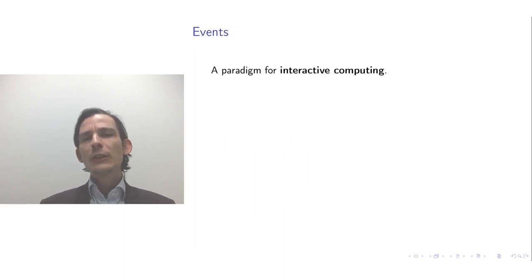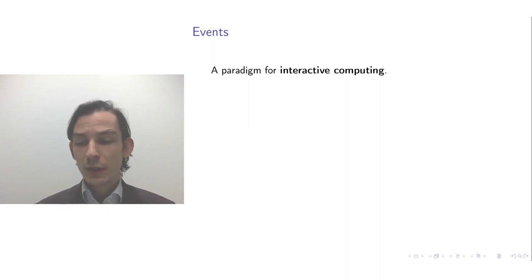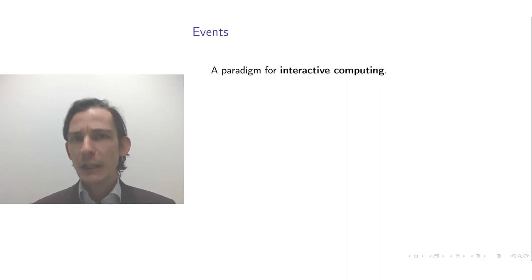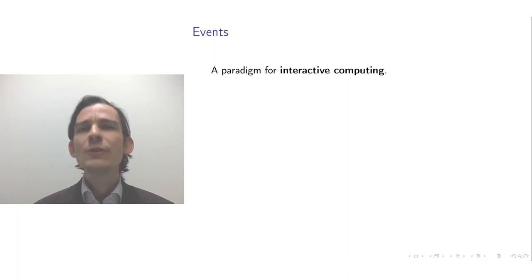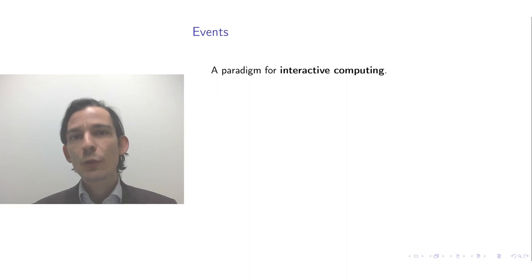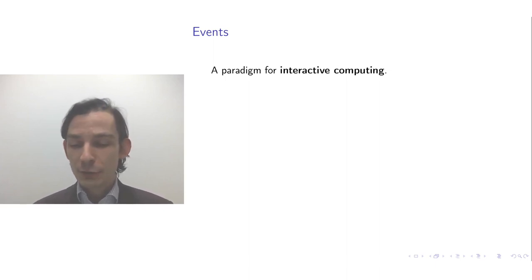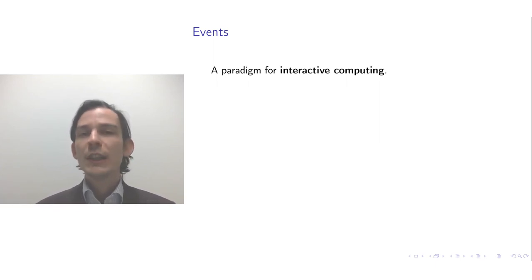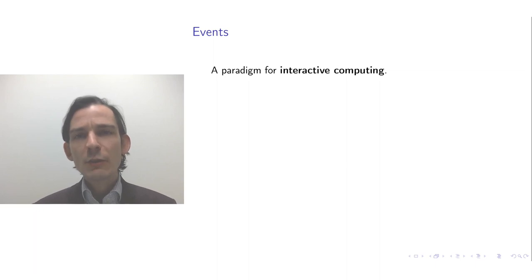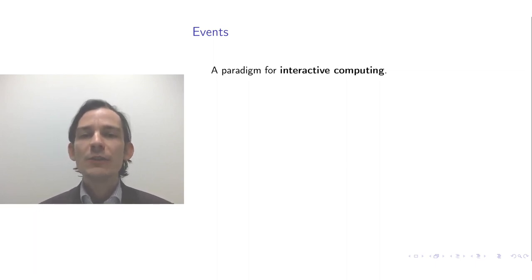Let's start with interactive computing. Up to now, you could consider a machine very simply as you give it a program, you give it some input, let it run, and you expect some output. But what happens if there is a user sitting behind the machine that is continuously interacting with it? Then the input is not just given at the start — the input is continuously given. That is also the case, for instance, while you are watching this video: you could hover with your mouse and stuff appears, or you could touch the screen and pause the video.